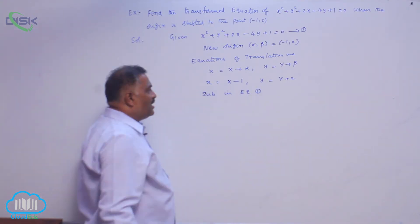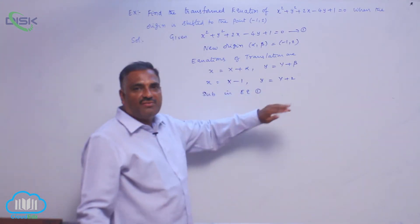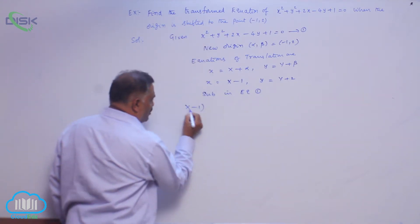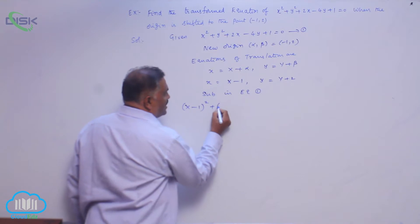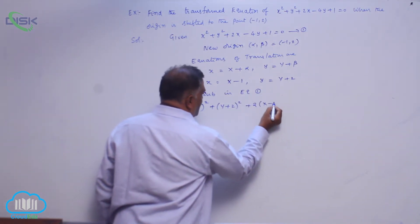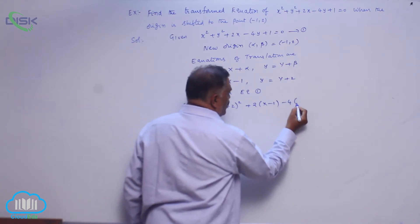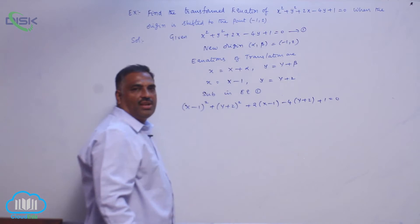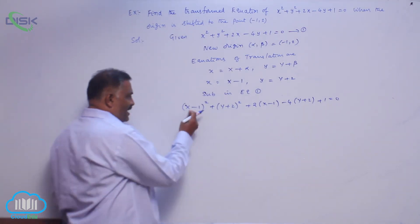Substituting in equation 1. Please remember small x, y is converted to capital X, Y. That is (X - 1)² + (Y + 2)² + 2(X - 1) - 4(Y + 2) + 1 = 0.